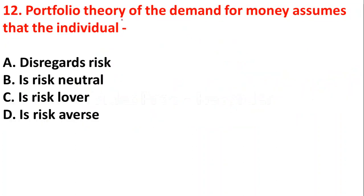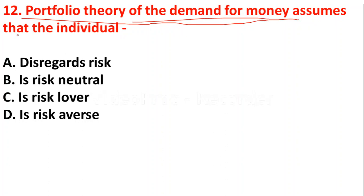The next question: portfolio theory of the demand for money assumes that the individual is — Option A: disregards risk; Option B: risk neutral; Option C: risk lover; Option D: risk averse. The portfolio theory of demand for money assumes the individual is a risk lover, so option C is the right answer. According to portfolio theory, individuals are risk lovers, meaning they are ready to take risk.